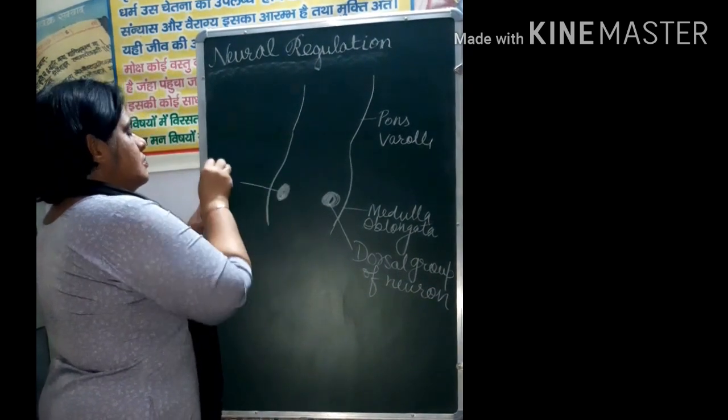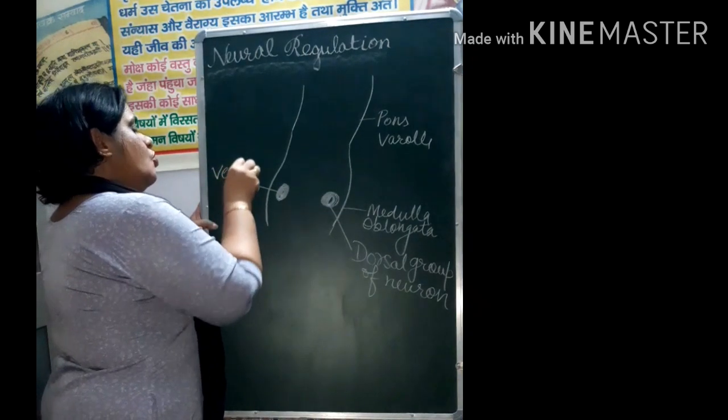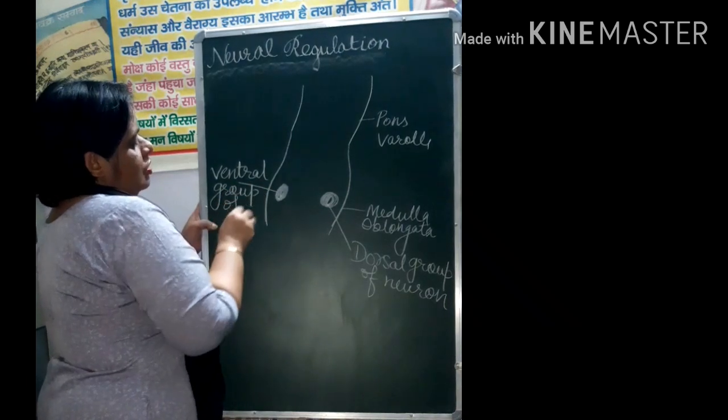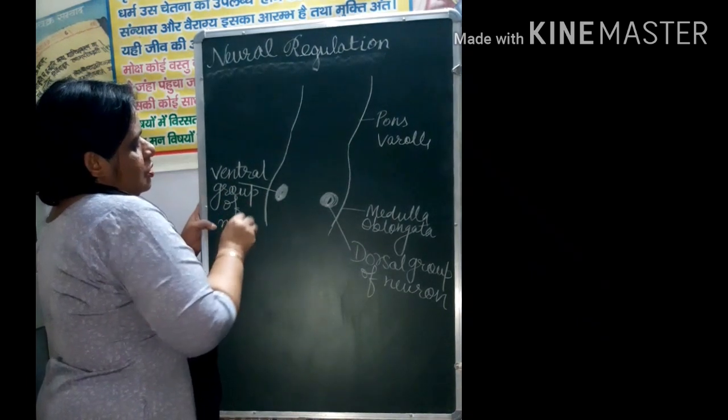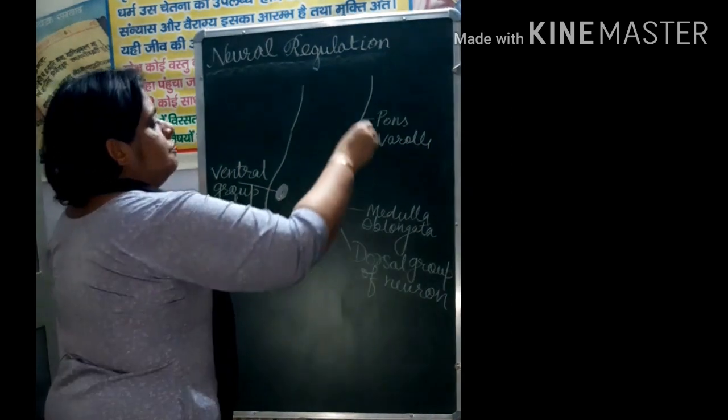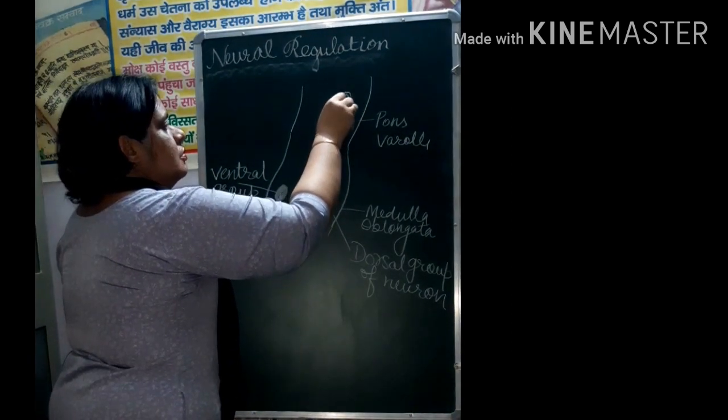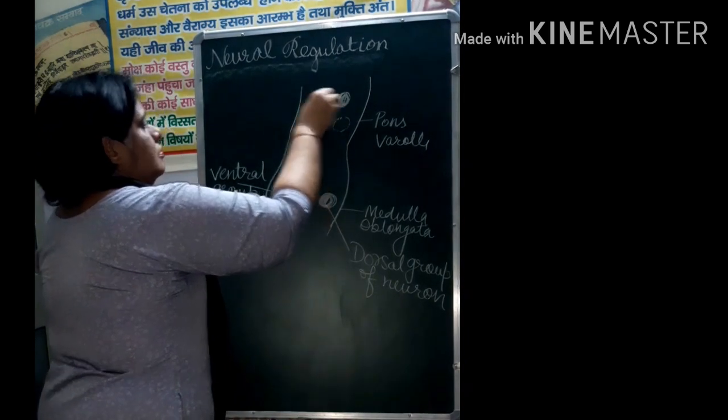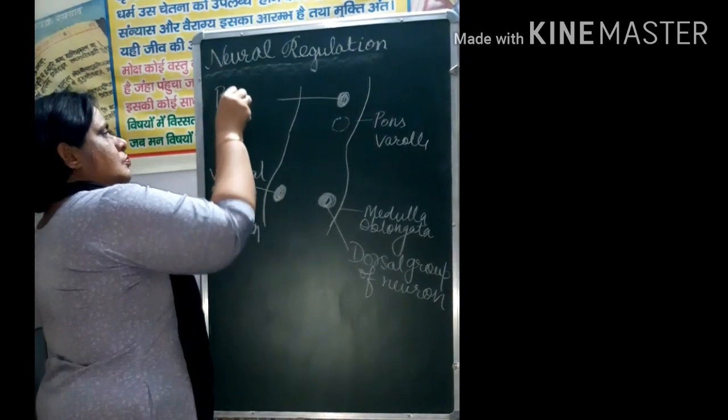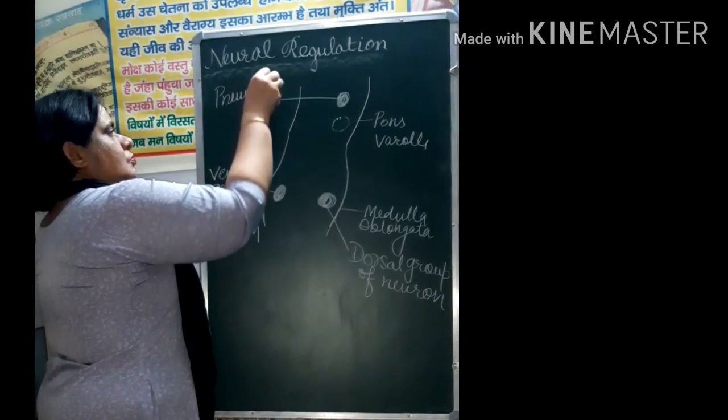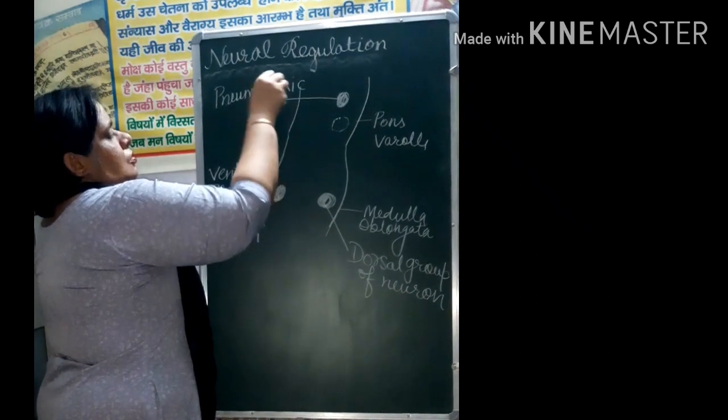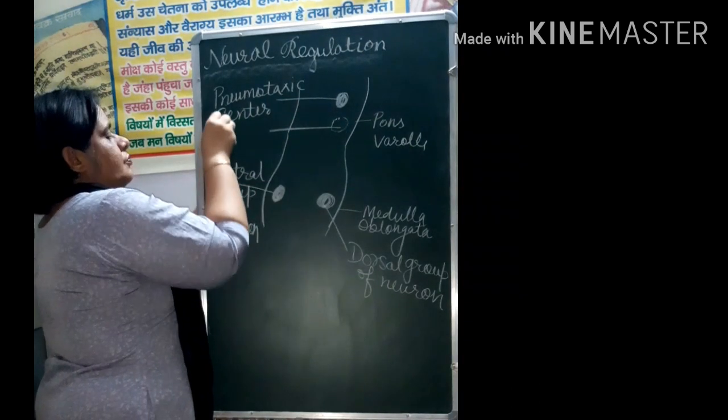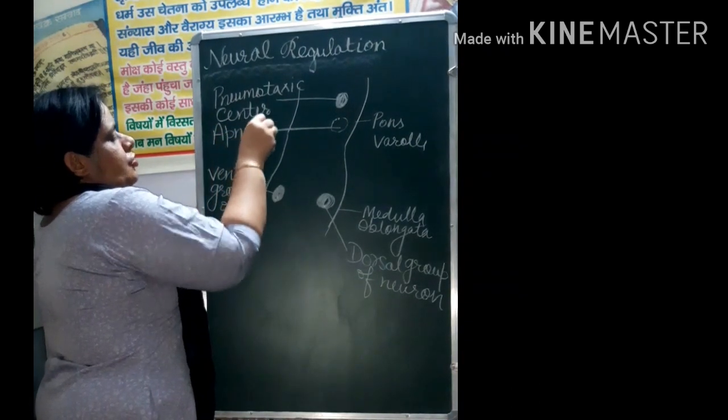Neurons are the nerve cells. This is Ventral Group of Neuron. And in Pons varolii there are present two centers. Pneumotaxic center. This center is called Pneumotaxic center and this is called Apneustic center.